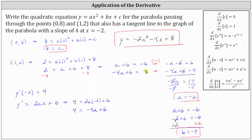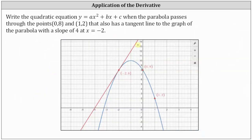Let's take a look at this graphically. We were given the points (0,8) and (1,2) as two points on the graph of the parabola. We were also given the graph had a tangent line with a slope of 4 at x equals negative 2, which is this point here. The red line is the given tangent line, and we just found the equation of the blue parabola, which is y equals negative 2x squared minus 4x plus 8. I hope you found this helpful.